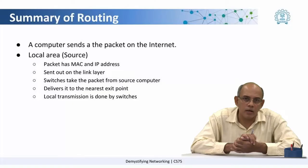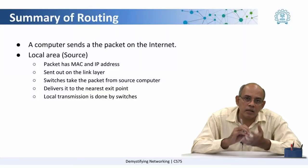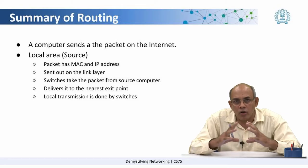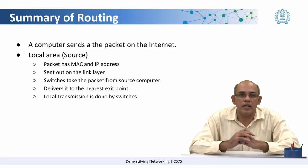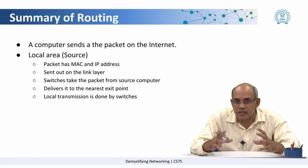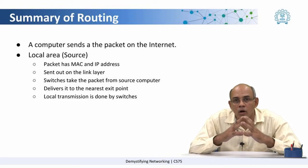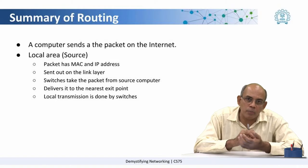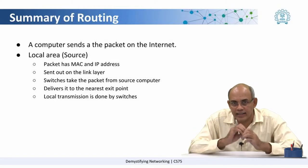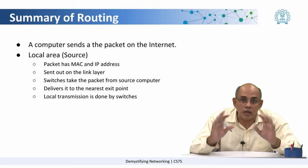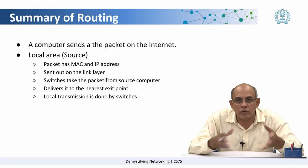As we come to the end of this week, let us try to summarize what all we have learned. We started off with saying that a source computer needs to send a packet to a destination computer somewhere on the internet. We saw in the first step that it is in the local area, so a packet has both a MAC address and an IP address at this point and it is sent out on the link layer. Switches at this level take the packet from the source computer to the nearest point of the internet for that local network. This entire local routing actually happens through a network of switches.